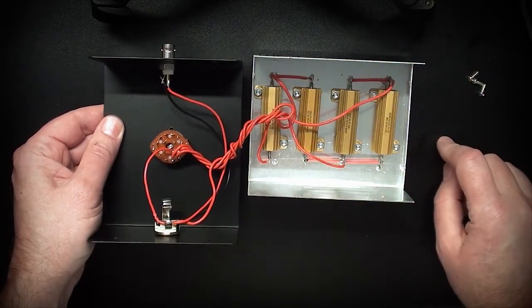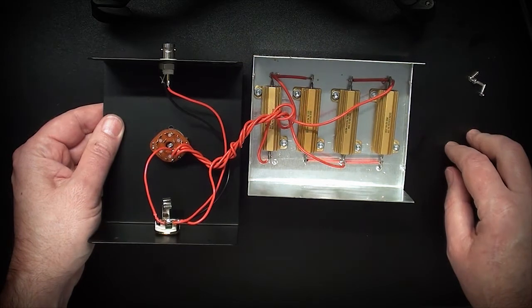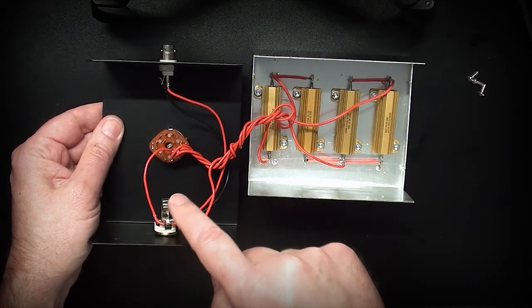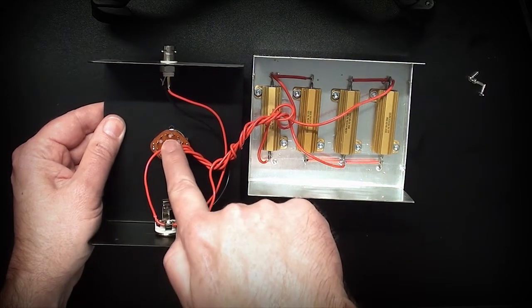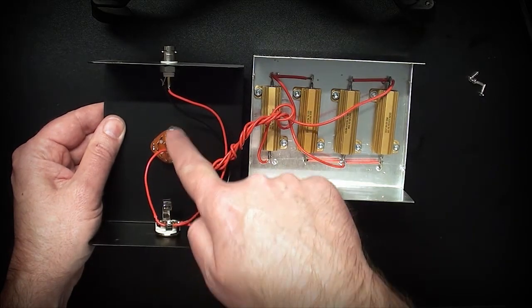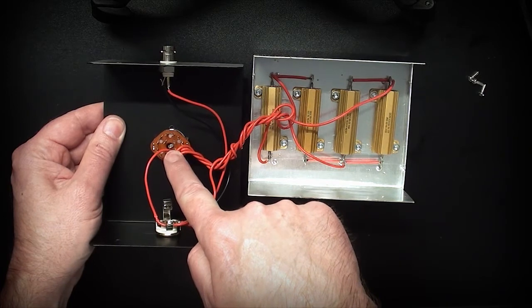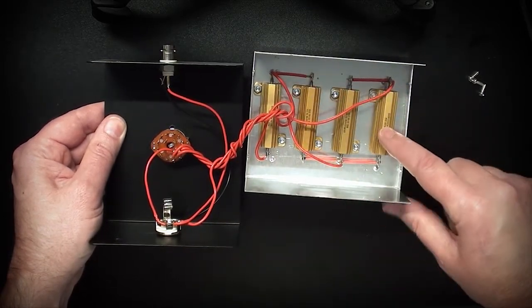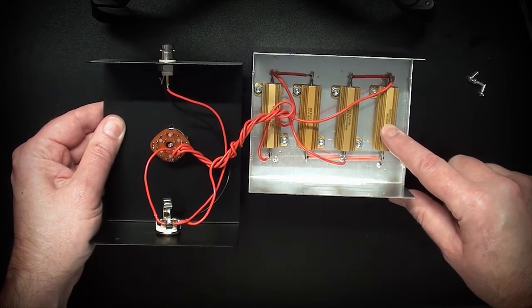Signal flow in from the jack to the switch, and then depending on how the switch is set, it goes out into the power resistors and provides the load for the amplifier.